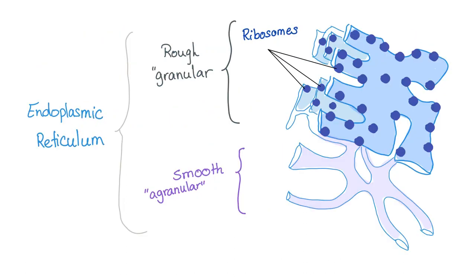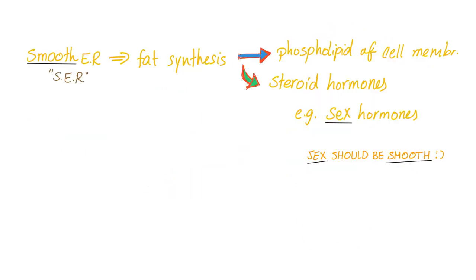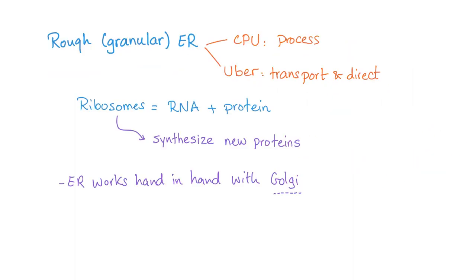Endoplasmic reticulum could be rough or smooth. Here is the rough and here is the smooth. Smooth endoplasmic reticulum handles fat synthesis, phospholipids of the cell membrane, and fat is important in steroid hormones such as sex hormones. And here is a mnemonic for you, just in case.